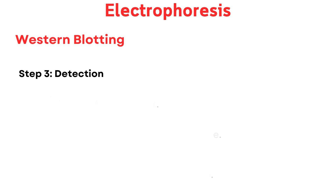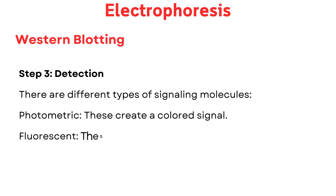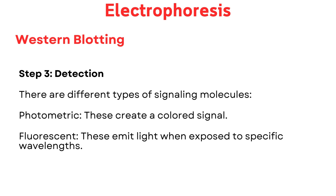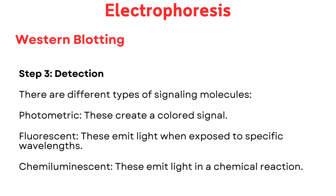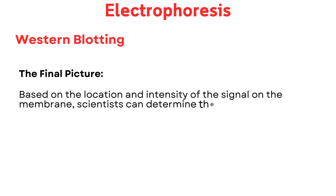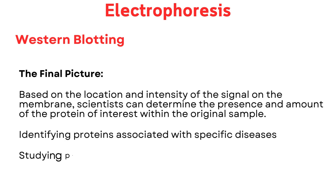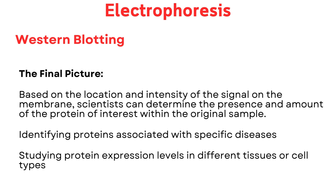There are different types of signaling molecules: photometric (create a colored signal), fluorescent (emit light at specific wavelengths), and chemiluminescent (emit light via chemical reaction). Based on the location and intensity of the signal on the membrane, scientists determine the presence and amount of the protein of interest. Western blotting is used in research to identify disease-associated proteins, study protein expression levels, and analyze protein modifications. While not commonly used in clinical settings, it plays a crucial role in advancing our understanding of proteins.